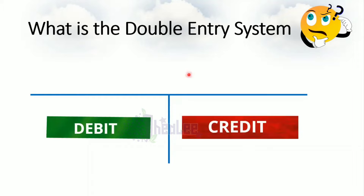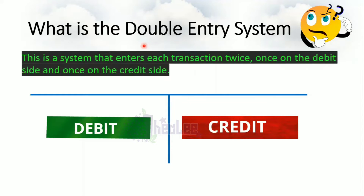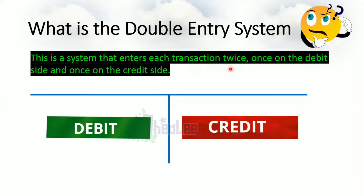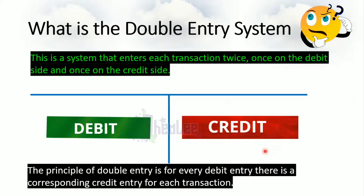Back to double entry — the term double means two. So when we talk about double entry, we're looking at two entries as it relates to a transaction. Another term associated with double is twice, so it is a system that enters each transaction twice: once on the debit side and once on the credit side. Debit refers to the left-hand side of an account, and credit refers to the right-hand side of an account.